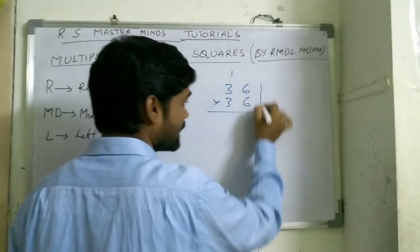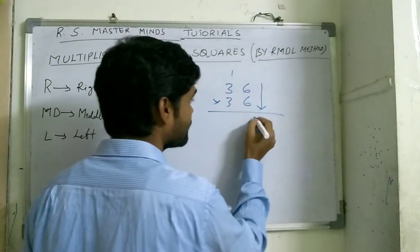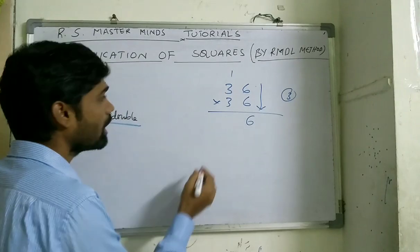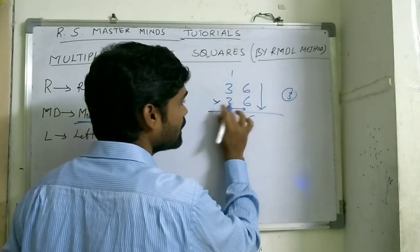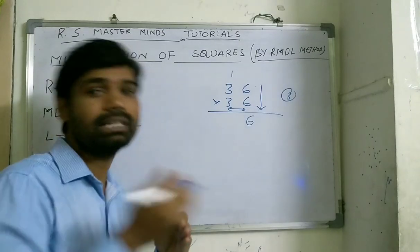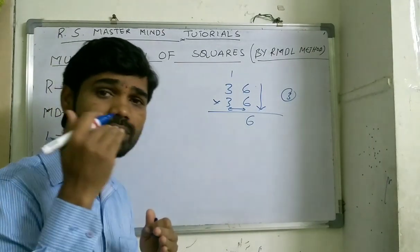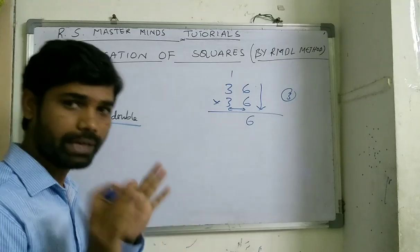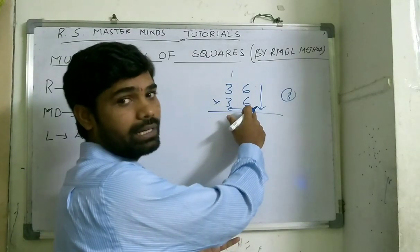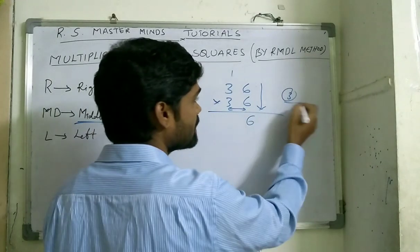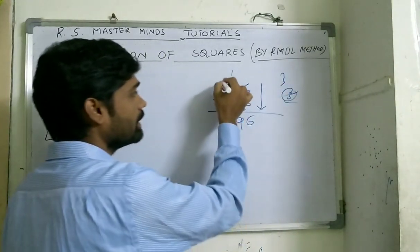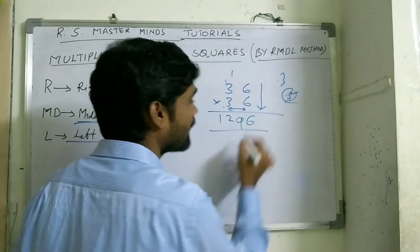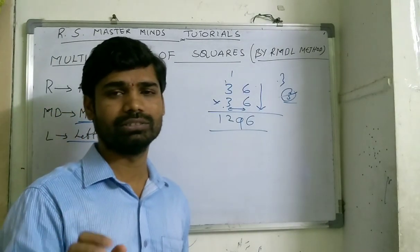Let's apply R and DL to 36 squared. R for Right: right-side digits are 6 and 6, so 6 times 6 is 36 — write 6, carry 3. MD for Middle and Double: 3 times 6 is 18, double it to get 36, plus carry 3 gives 39 — write 9, carry 3. L for Left: 3 times 3 is 9, plus carry 3 gives 12. So the answer is 1296.